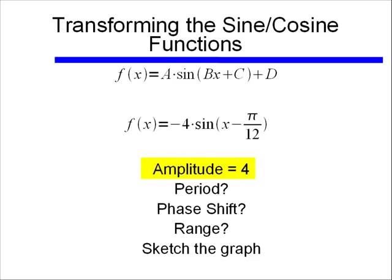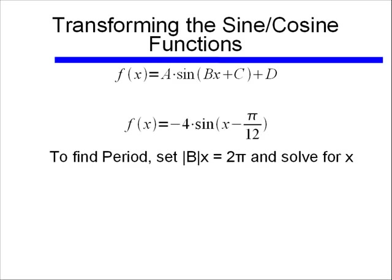Alright, so we've gotten the amplitude. Now what about the period of the function? Remember to find the period, I recommended that you set the absolute value of bx equal to 2π. Remember 2π is our typical period, and we want to see how this value of b affects our typical period.